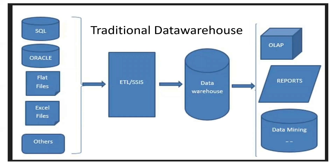In a traditional data warehouse, we have different types of sources like SQL, Oracle, other transactional databases, flat files, Excel files, CSV files, or Salesforce. We load all this data into SQL Server using SSIS. In the ETL process, we do data cleaning and data transformation, and then we load all this data into the data warehouse.